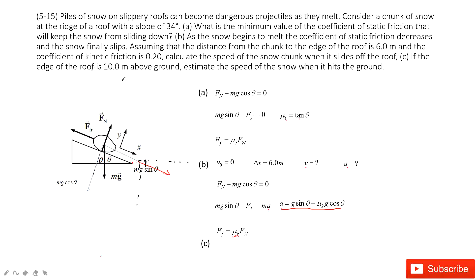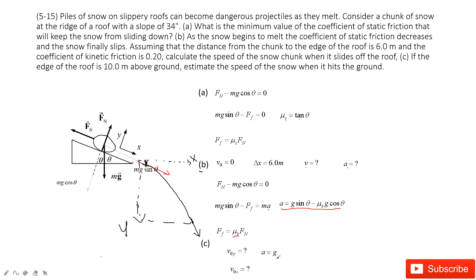The edge of the roof is 10 meters above the ground, and we need to find the speed of the snow when it hits the ground. The snow undergoes projectile motion. To find the final speed, we need the x and y components of velocity. We project the initial velocity — found from part b — into horizontal and vertical components. The acceleration is g downward, and the vertical displacement is the height Δy. The x-component of velocity remains constant.